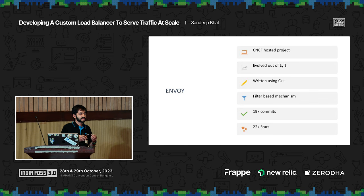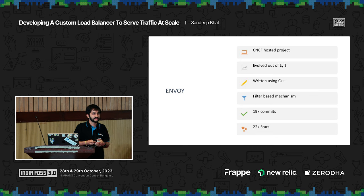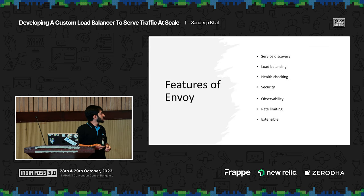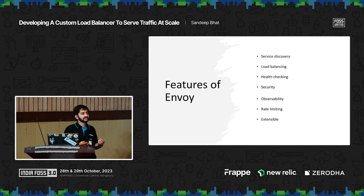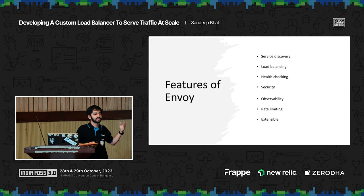The first project I want to call out is Envoy. It is a CNCF-hosted project, it evolved out of Lyft, and is primarily written in C++. It is pretty popular in the community with a lot of stars and commits. Envoy is also used in Istio as a reference. Envoy can be used as a service discovery mechanism, for load balancing, health checking, and has a lot of built-in features.